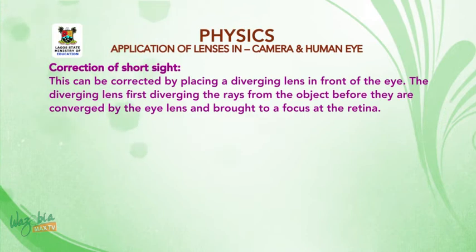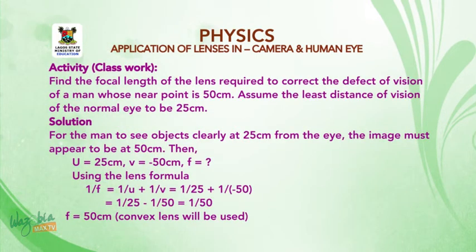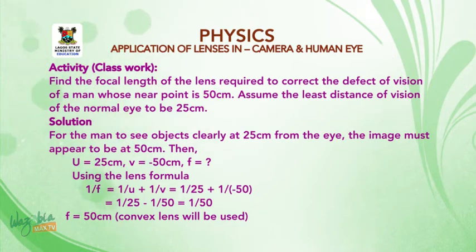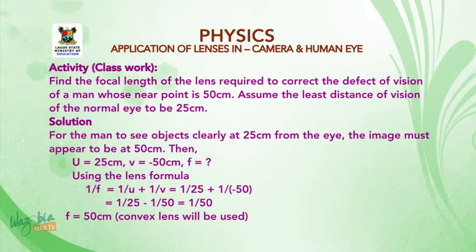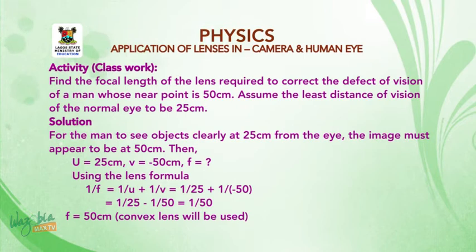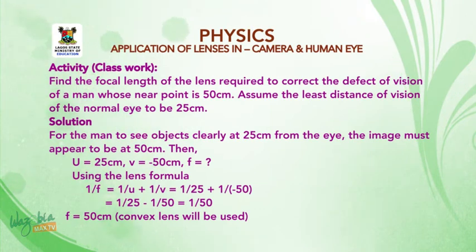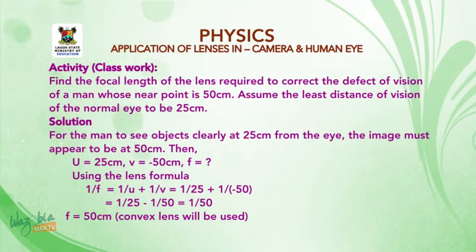Activity: Find the focal length of the lens required to correct the defect of vision of a man whose near point is 50 cm. Assume the least distance of vision of the normal eye to be 25 cm. For the man to see objects clearly at 25 cm from the eye, the image must appear to be at 50 cm. That is, U = 25 cm and V = −50 cm. Using the lens formula: 1/F = 1/U + 1/V = 1/25 + 1/(−50). Solving this gives F = 50 cm. This shows that the man will require a convex lens.